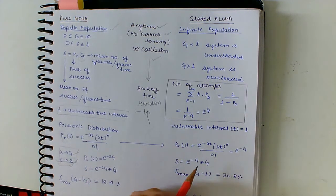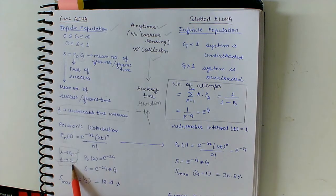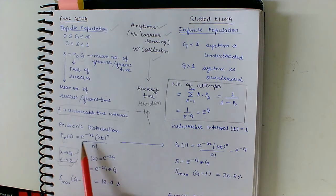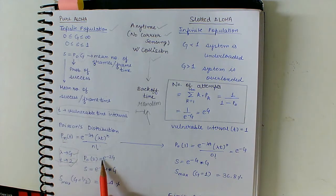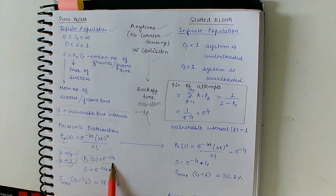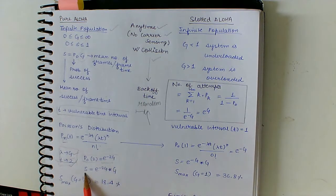The vulnerable time interval is 2T time interval, so we need no other station to transmit a frame for 2T time interval. So we put the values of G and 2 in this equation, and for P0(2) we get the value e to the power minus 2G.